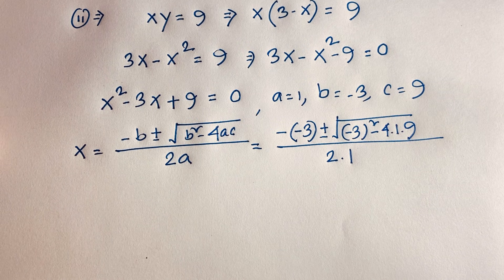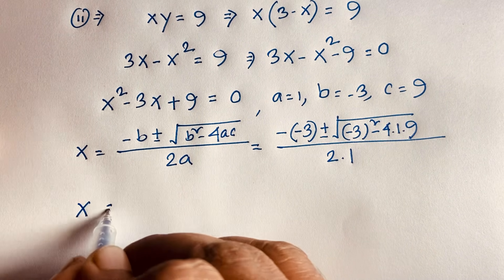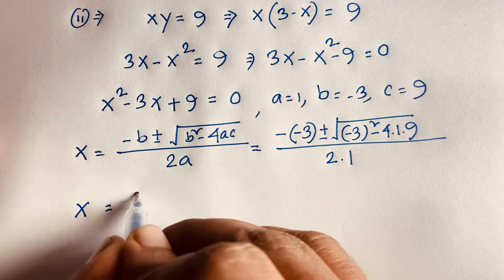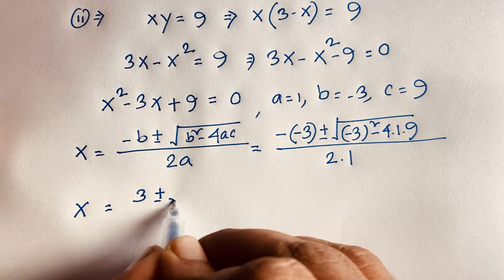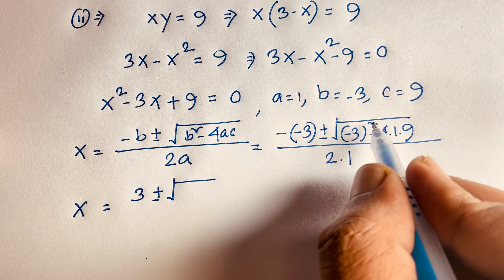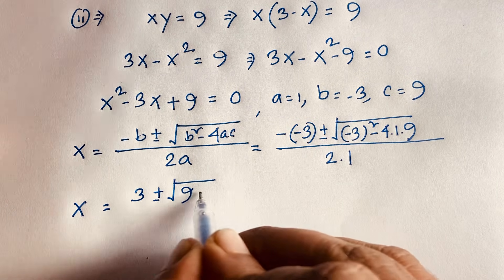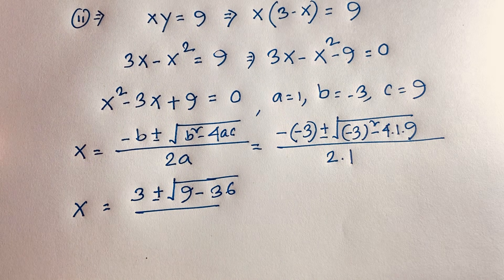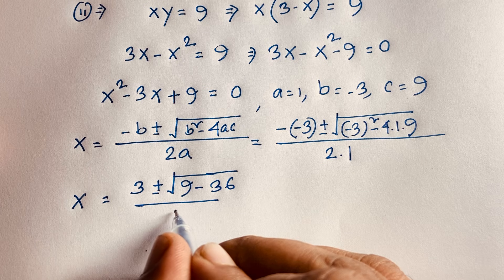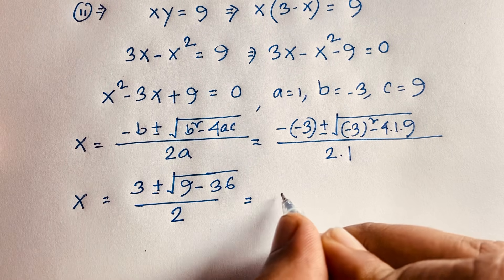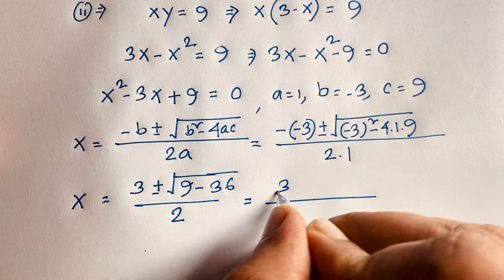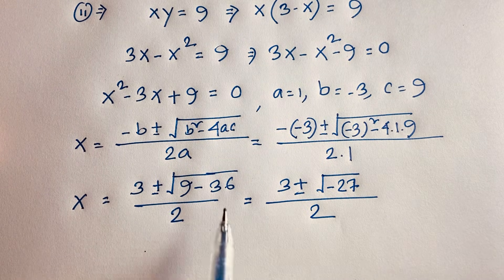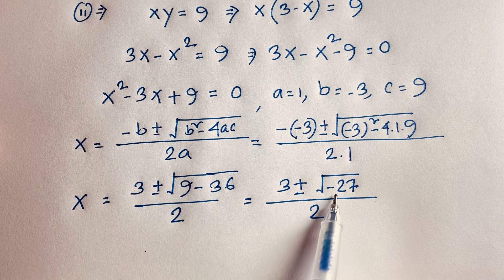Simplifying: x equals 3 plus or minus square root of — negative 3 squared is positive 9 (even power), so 9 minus 4 times 9, which is 9 minus 36, over 2 times 1, which is 2. That gives us 3 plus or minus square root of negative 27 over 2. Since 9 minus 36 gives negative 27.